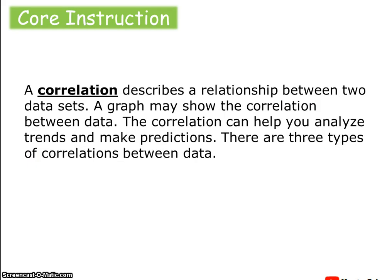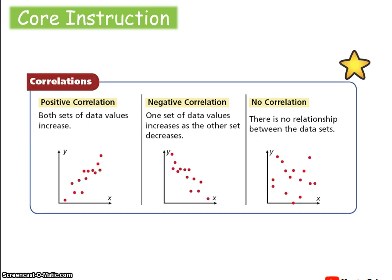A correlation describes a relationship between two data sets. A graph may show the correlation between data, and it can help you analyze trends and make predictions. There are three types: data can have a positive correlation, in which both sets of data values increase — as x values increase, y values increase. A negative correlation is one in which one set of data values increases as the other decreases.